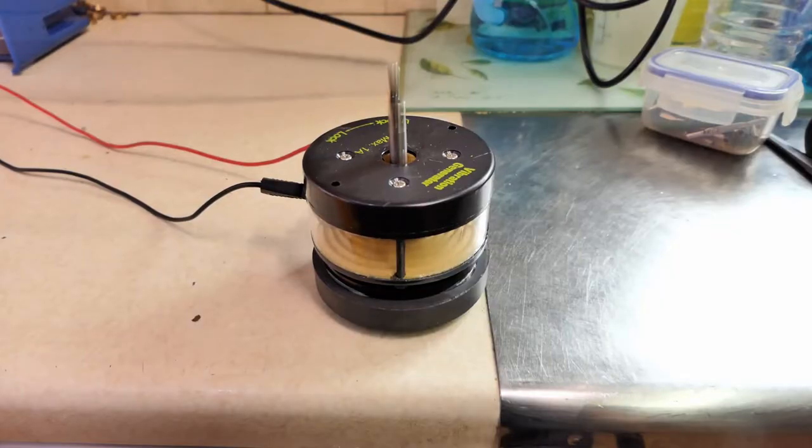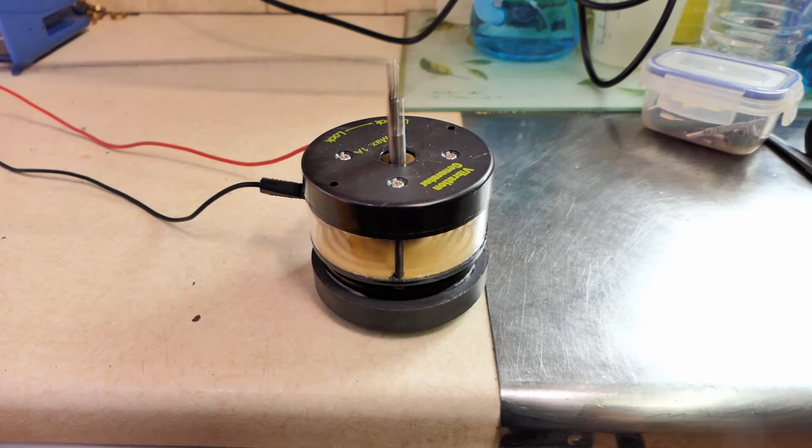The vibration generator is simply a speaker with a pole attached to the speaker, so as the speaker moves in and out, this string is moved up and down.